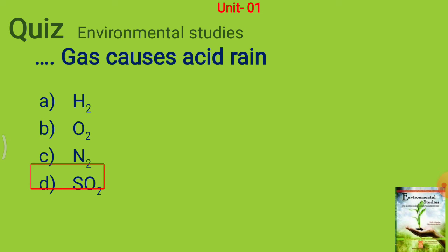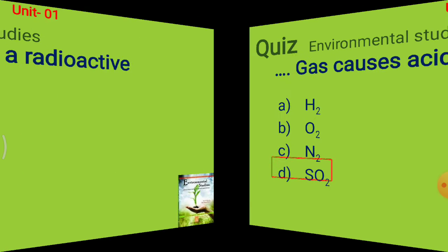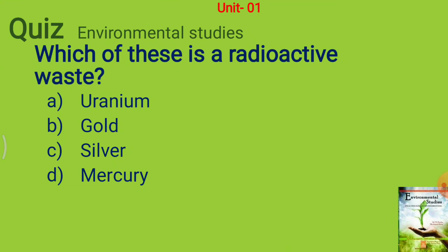The answer is SO2, sulfur dioxide. Next question: which of these is a radioactive waste — uranium, gold, silver, or mercury? The answer is uranium.